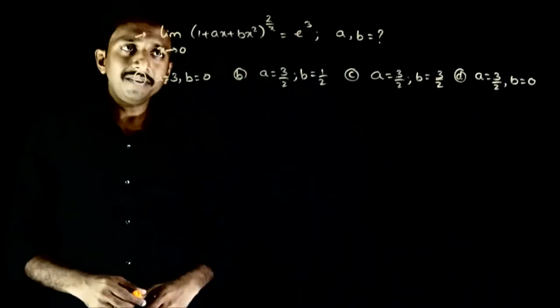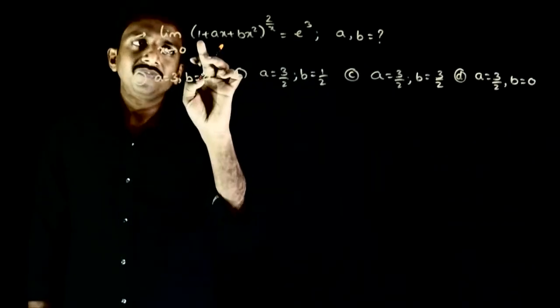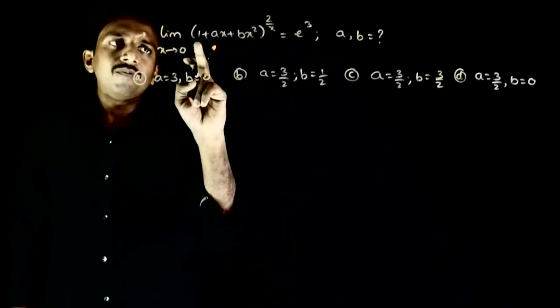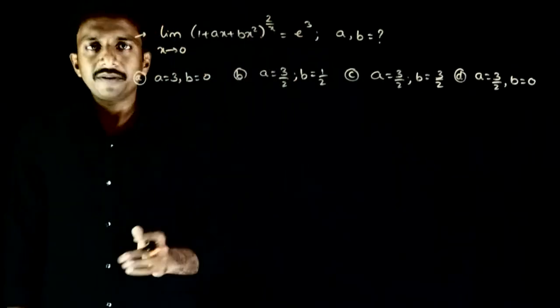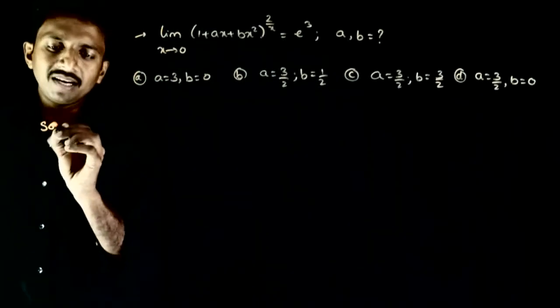A bhoot standard limit hai. So aap x is equal to 0 directly substitute kiya to aap deekh sakte this is of the form 1 power infinity. 1 plus 0 power 2 by 0. So 1 power infinity form mein hai. So mere paas standard limits kiya hai.